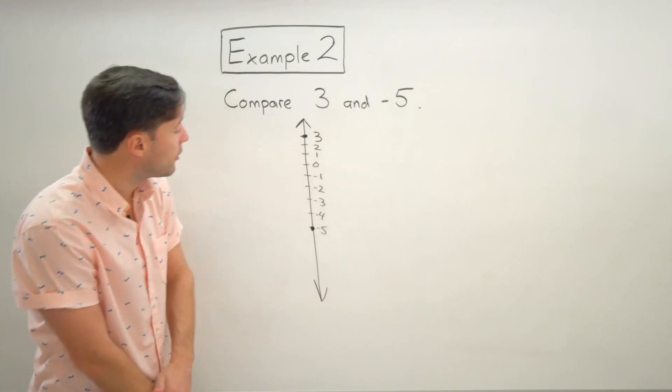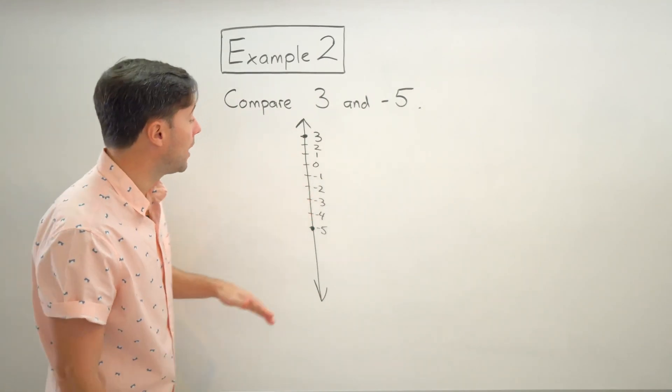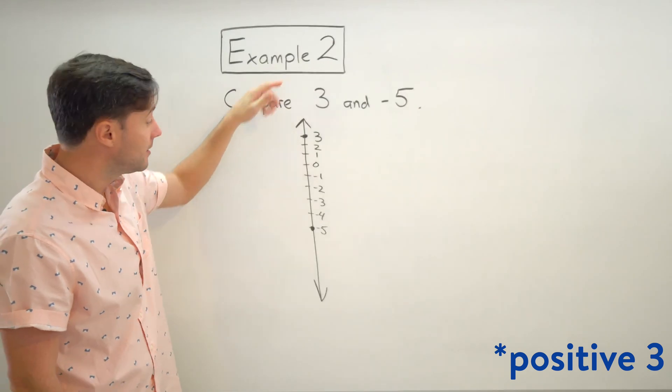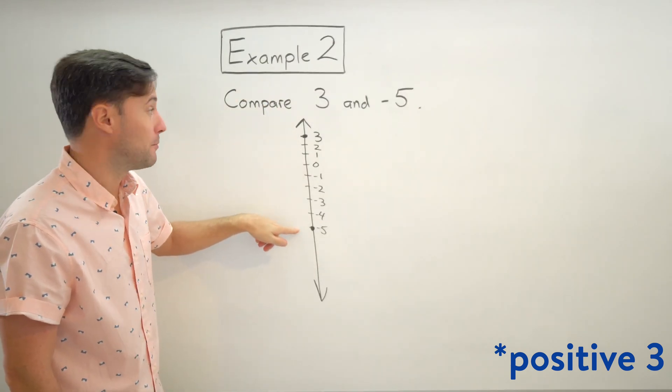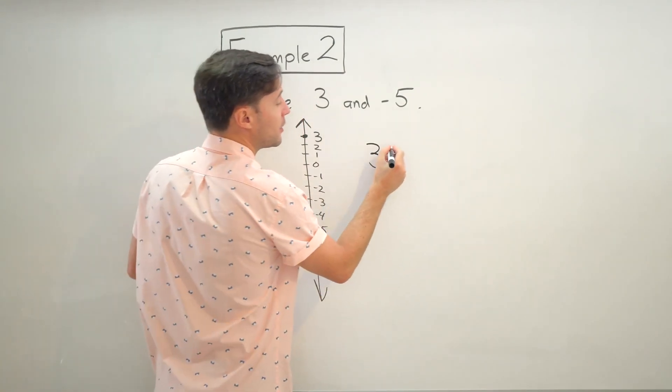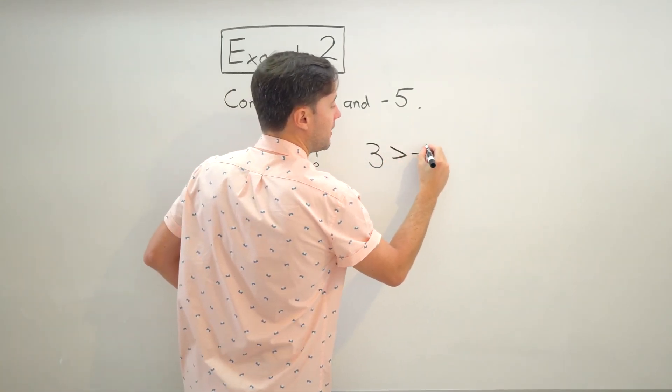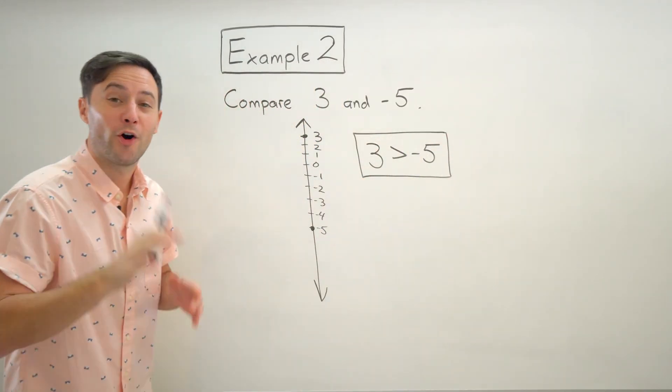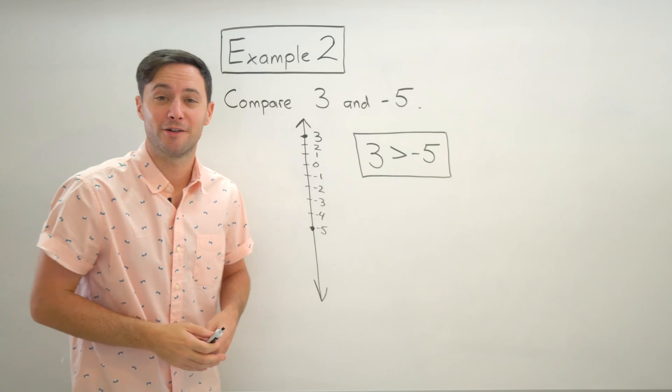So again, how can this help us compare them? Well, negative three is above negative five on the number line, which means three is greater than negative five. All right. Hopefully that helps. Here's some to try on your own.